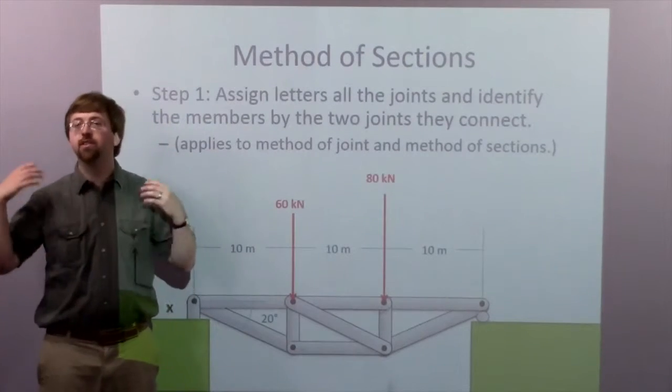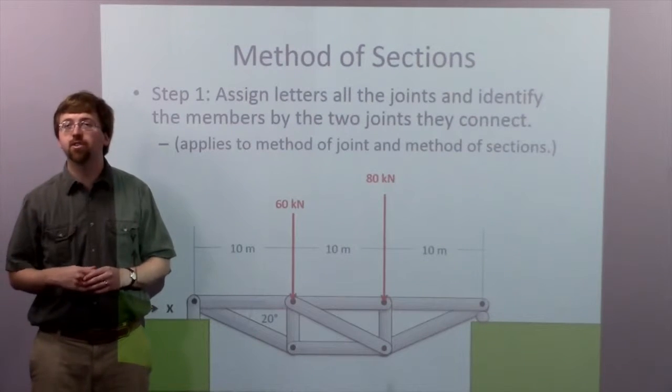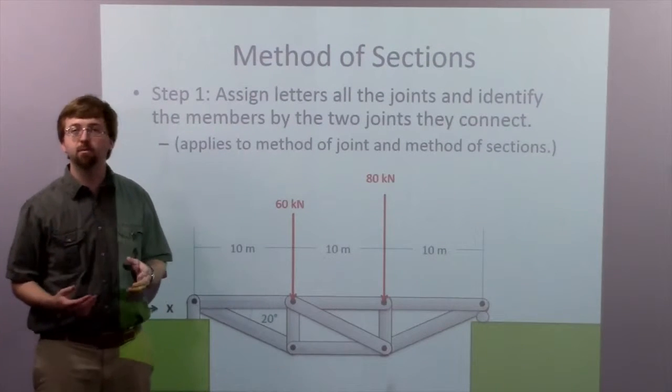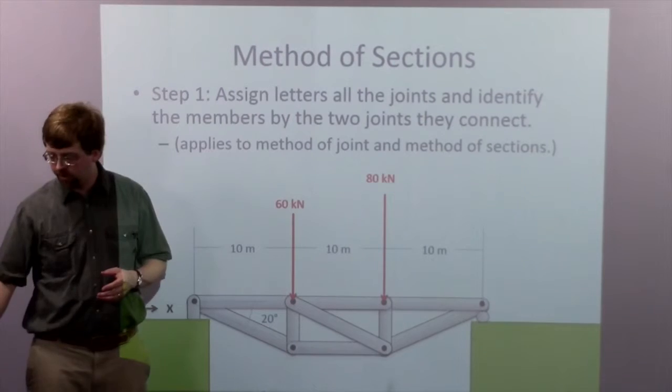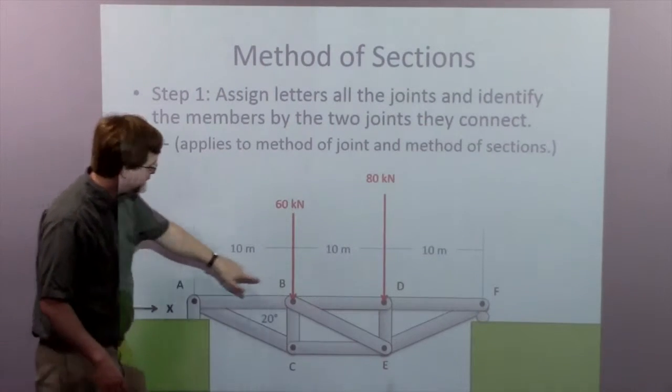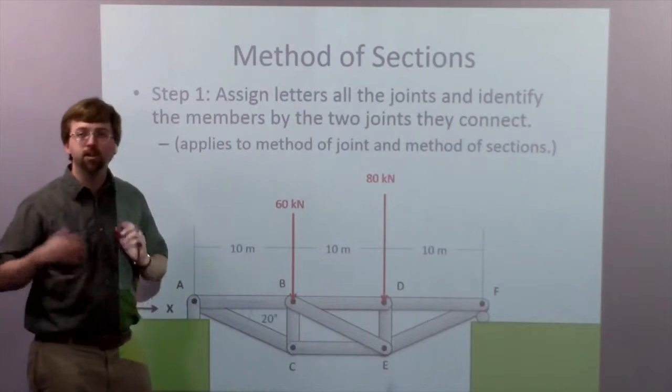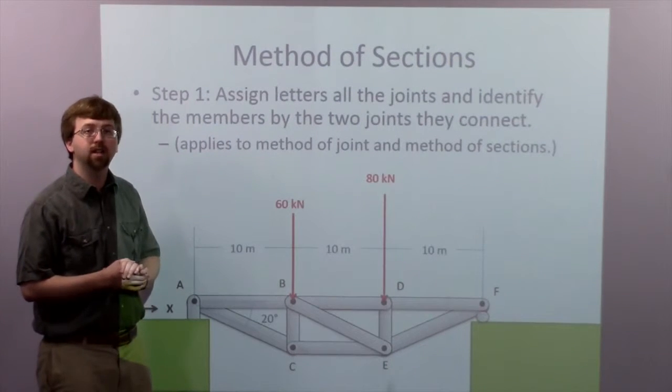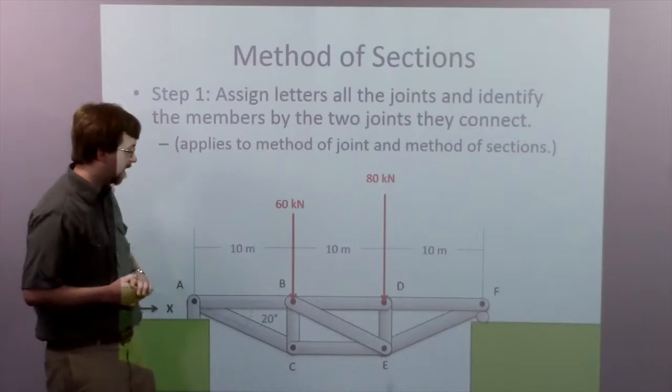So how do we use the method? Step one, we're going to assign letters to all the joints to identify the members and the joints they connect. So here I've got joint A, joint B, joint C.